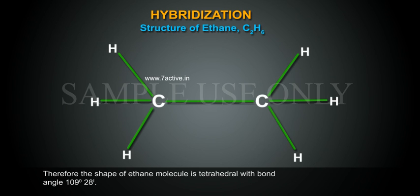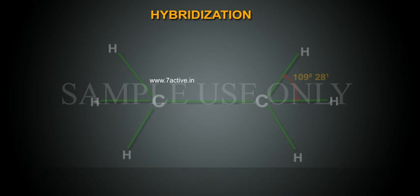Therefore, the shape of ethane molecule is tetrahedral with bond angle 109 degree 28 minute.